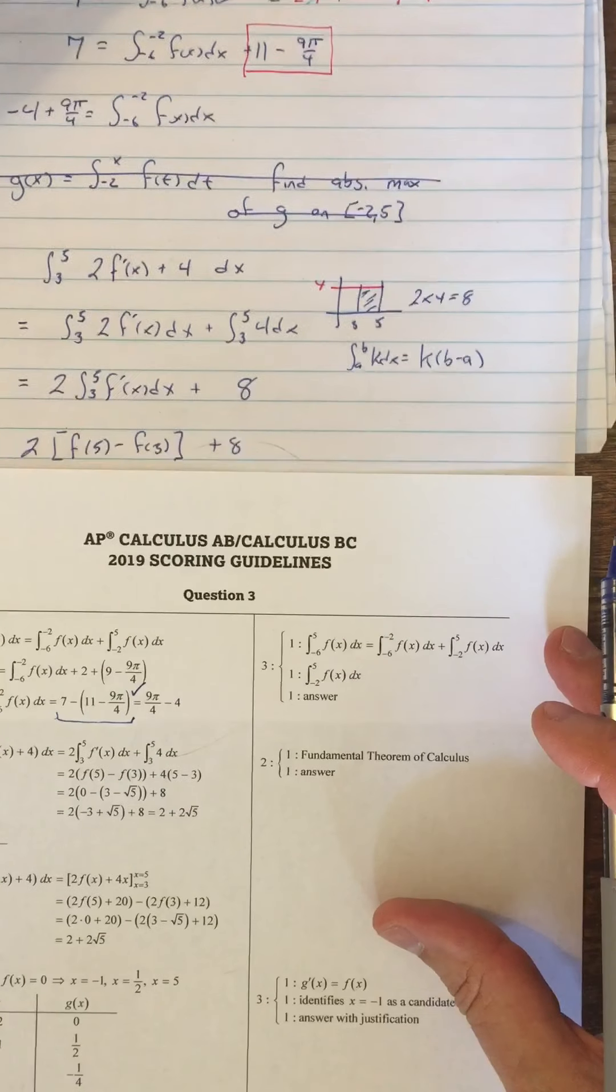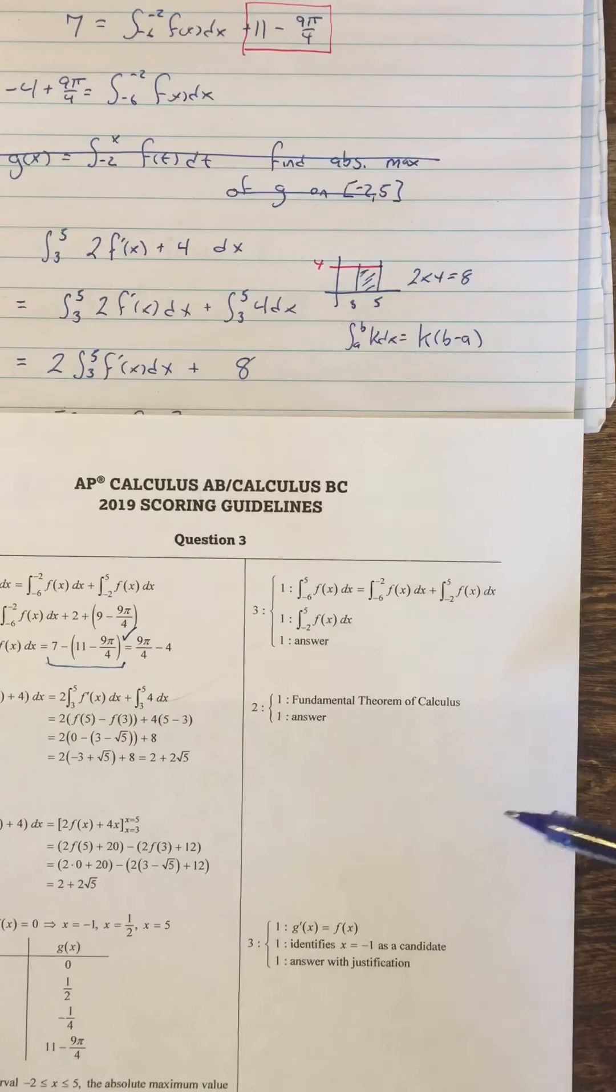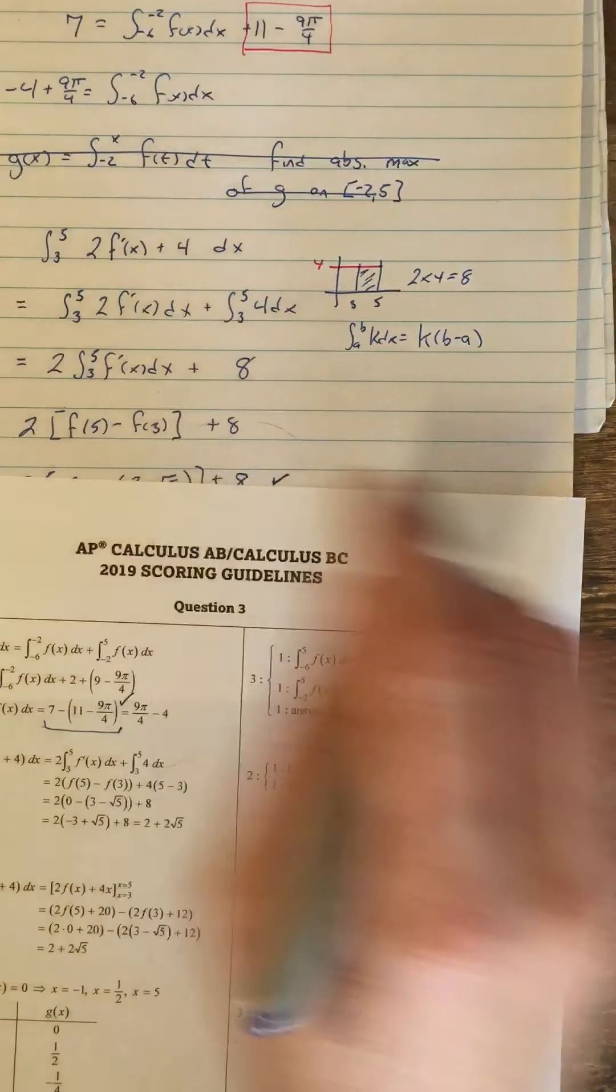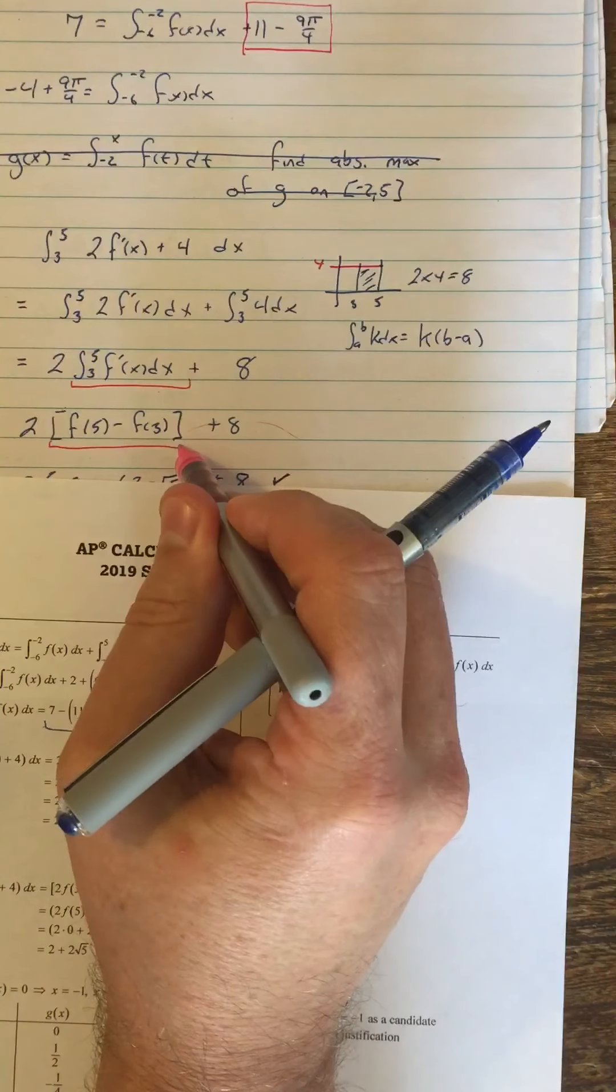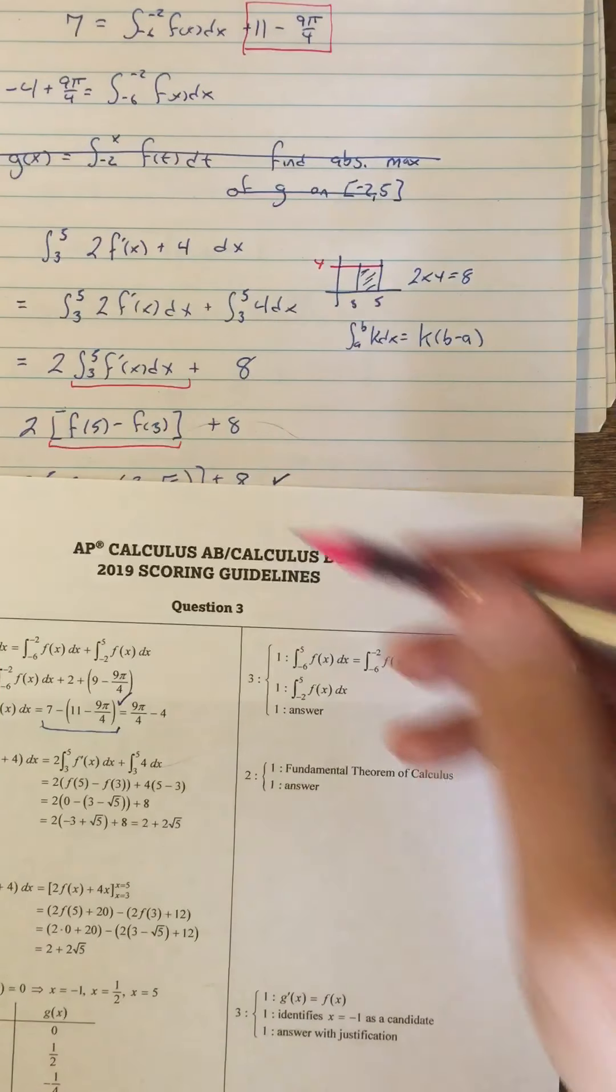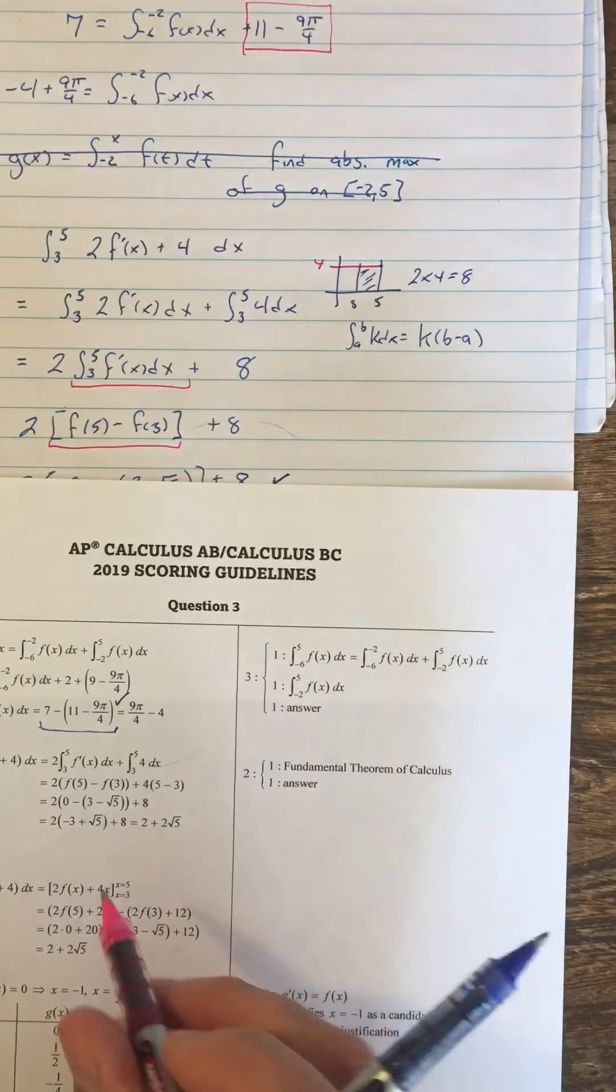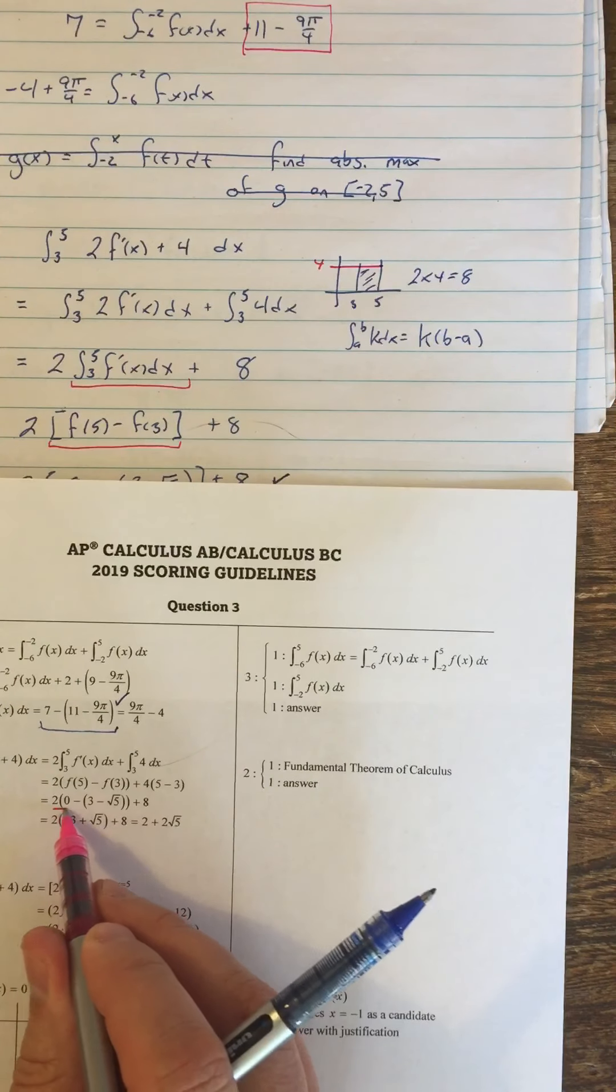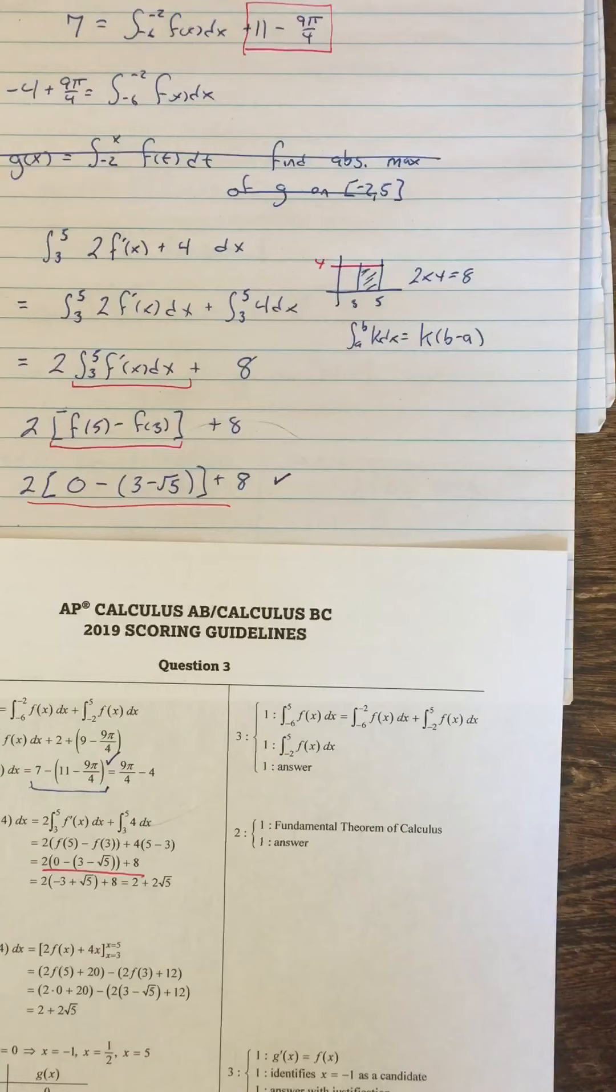Then part B, we get one point for using fundamental theorem of calculus. In other words, we get one point for changing this guy into this. And then we get one point for the answer. So pretty much you're going to have to get that all right in order to get it. Notice again though, that we can leave our answer like this. That's how I encouraged you to leave your answer.